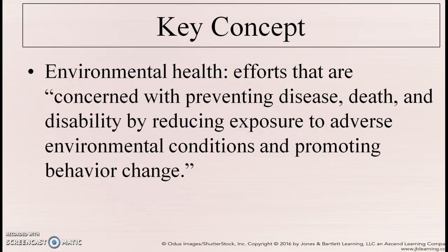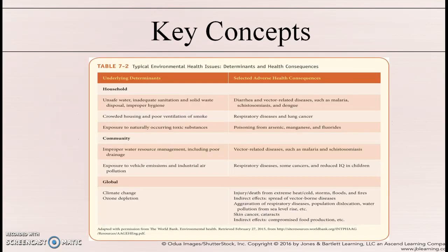The key concept of environmental health is efforts concerned with preventing disease, death, and disability by reducing exposure to adverse environmental conditions and promoting behavior change. Table 7-2 talks about typical environmental health issues, such as exposure to naturally occurring toxic substances — for example, poisoning from arsenic, manganese, and fluorides.